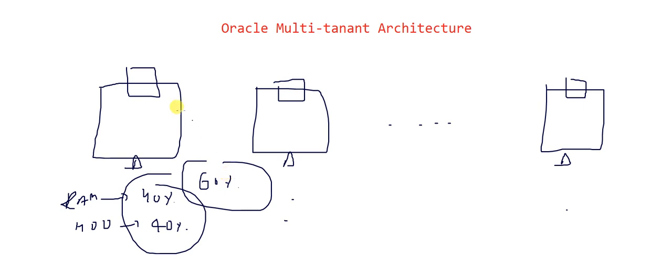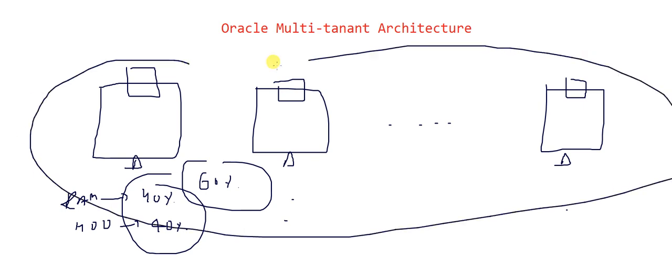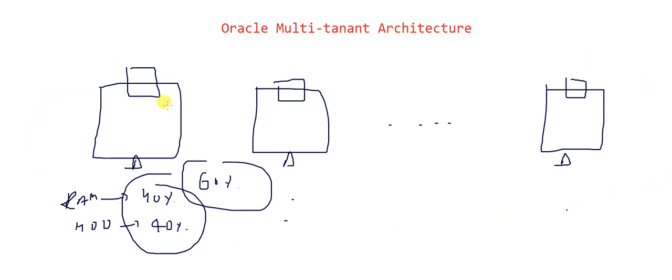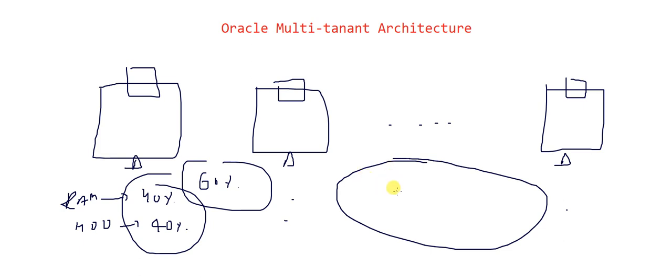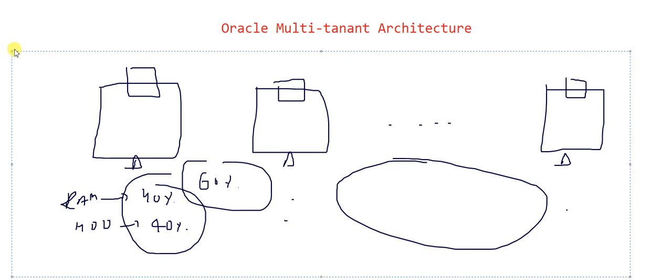Also, for each server you need one DBA, so for a hundred servers you need a hundred DBAs. Oracle started thinking about what should be done to get rid of this kind of issue — to reduce the number of DBAs needed. That's why multi-tenant architecture was introduced. They came up with a solution where instead of having a hundred servers with a hundred databases, you have only one database which can act like a hundred servers. That's called your multi-tenant architecture or multi-tenant database.